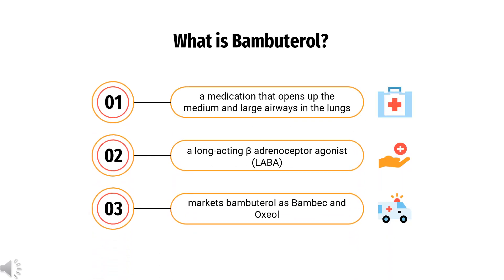What is Bambuterol? Bambuterol, INN, is a long-acting beta-2 adrenoceptor agonist, LABA, used in the treatment of asthma. It is also a prodrug of terbutaline. Commercially, the AstraZeneca Pharmaceutical Company produces and markets Bambuterol as Bambac and Oxiol. It is not available in the U.S.